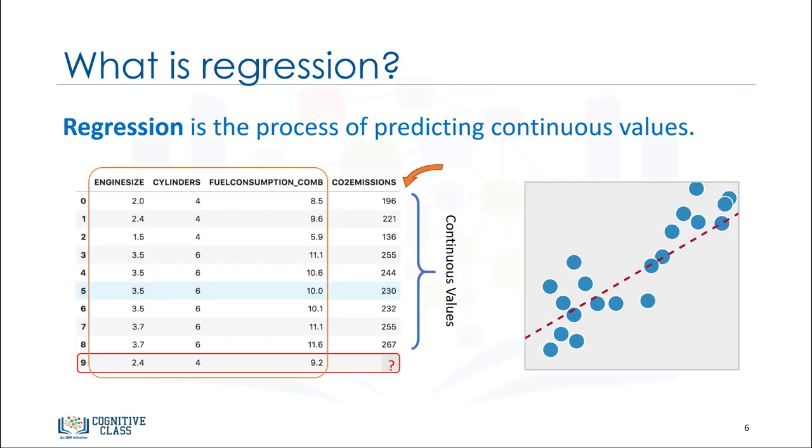Regression is the process of predicting a continuous value as opposed to predicting a categorical value in classification. Look at this data set. It is related to CO2 emissions of different cars. It includes engine size, cylinders, fuel consumption, and CO2 emission of various models of automobiles.